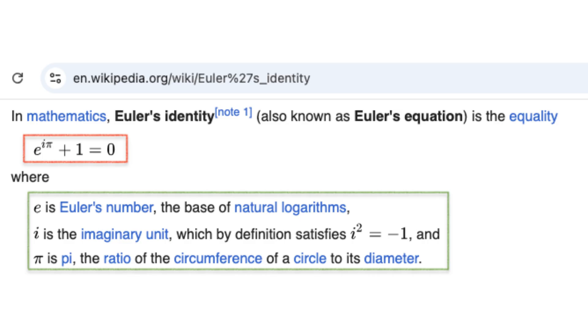The number e, approximately equal to 2.71828, is the base of the natural logarithm. The imaginary unit i is defined by the property that i equals the square root of minus 1. The number pi represents the ratio of a circle's circumference to its diameter.